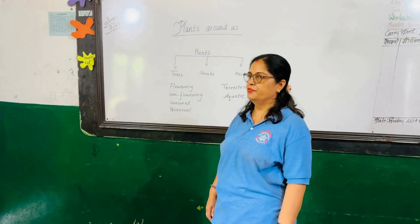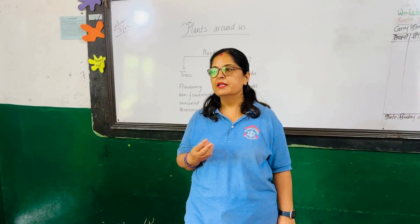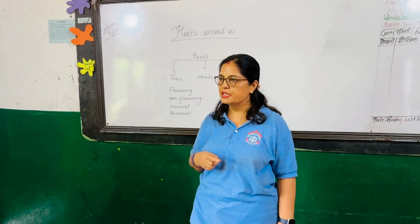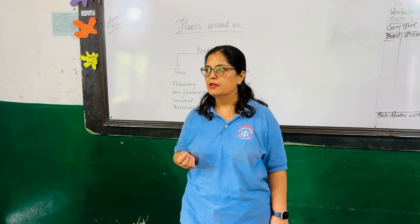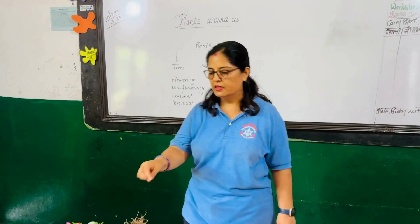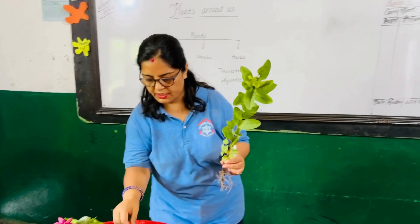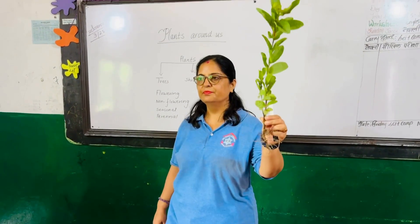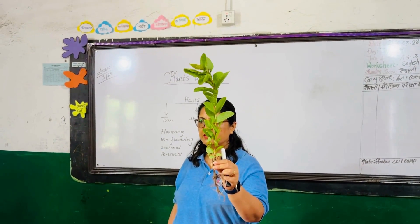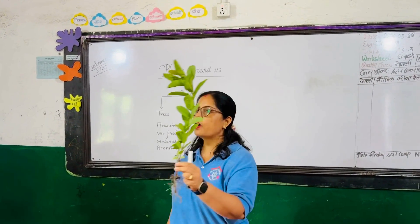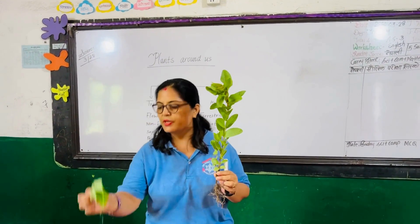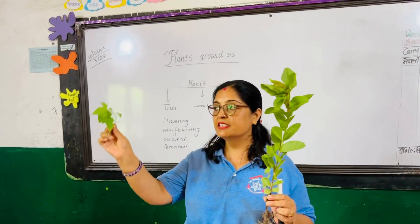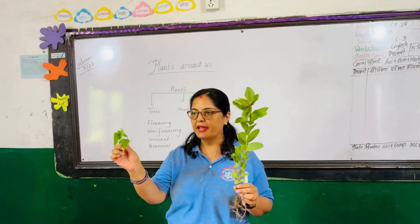There are different types of trees — some are neem tree, guava tree, apple tree, mango tree, papaya tree. Here are some trees. Which tree is this? Guava tree. It is a baby plant of guava tree. And which tree is this? Papaya tree. It is a baby plant of papaya tree.